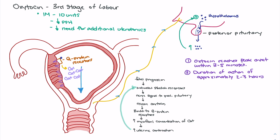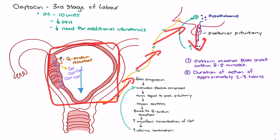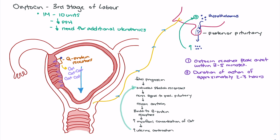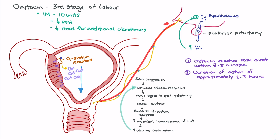Once the fetus is born, the body relies on uterine contraction to stimulate receptors and release more oxytocin. However, the uterus can become fatigued, or pathology may prevent it from contracting fully. After delivery, decreased contraction strength leads to decreased nerve activation and decreased oxytocin release. Providing exogenous oxytocin is beneficial because endogenously released oxytocin only provides about two to three hours of effect. In the third stage of labor, a bolus IM dose of 10 units of exogenous oxytocin can restart strong uterine contraction, re-stimulating the nerves, hypothalamus, and posterior pituitary to restart the positive feedback loop.